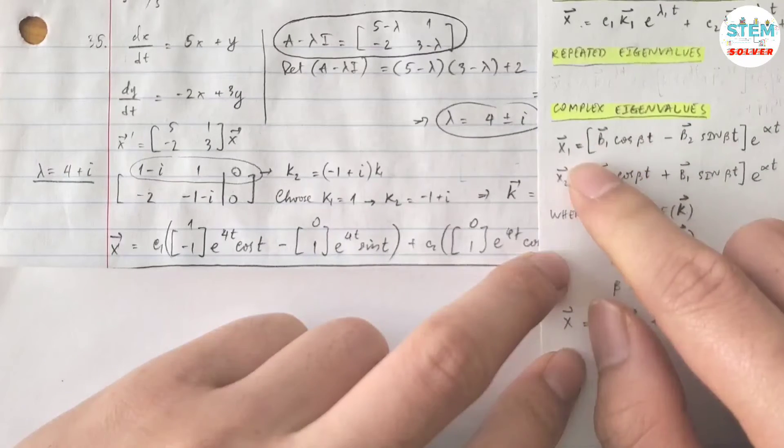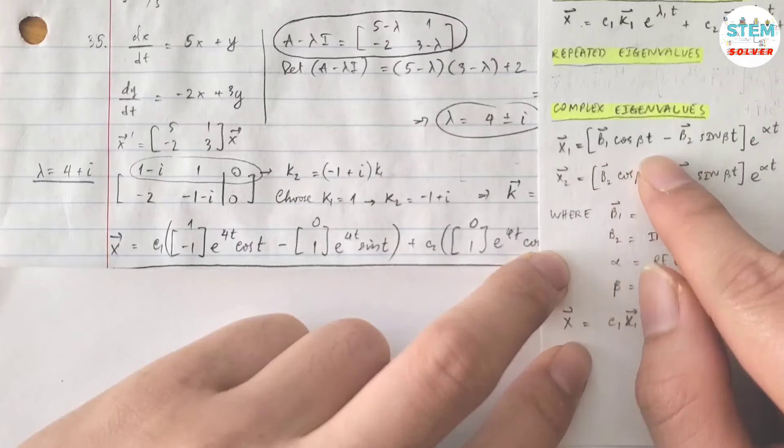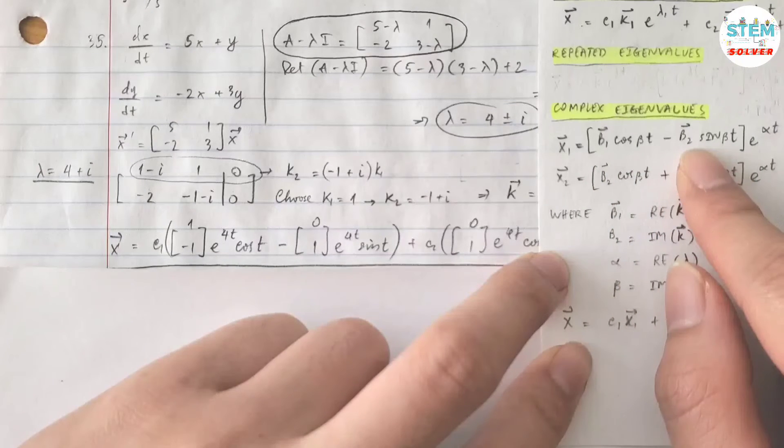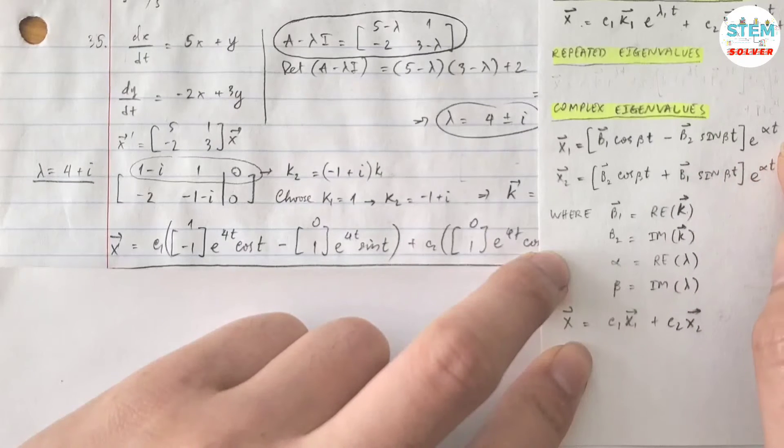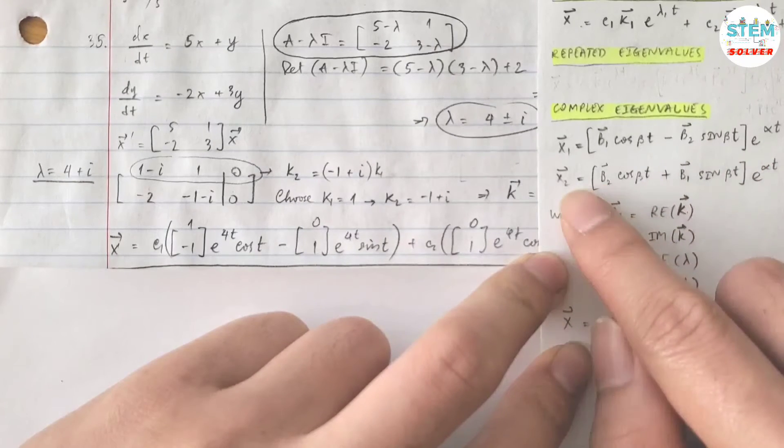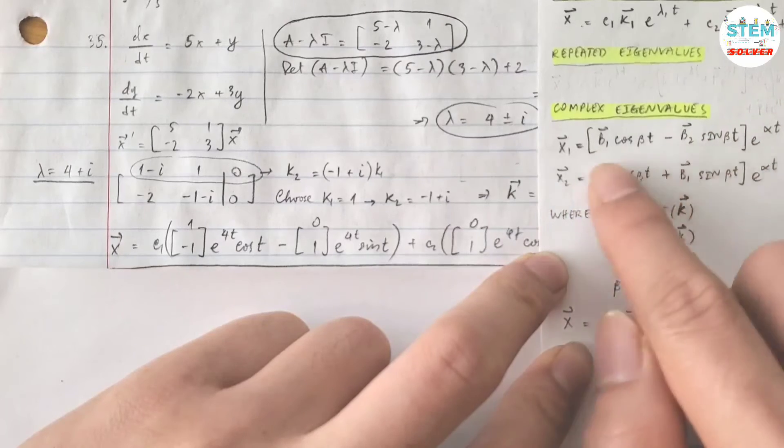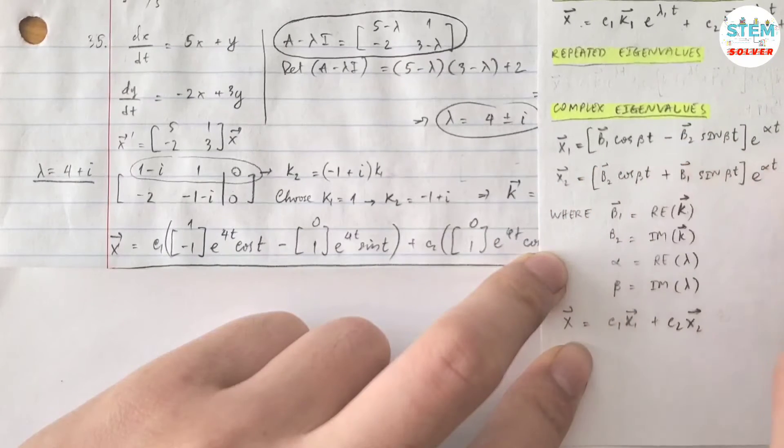So what is your vector x1? Vector x1 is vector b1 times cos(beta t) minus vector b2 sin(beta t), all multiplied by e to the alpha t. And for the second solution, you just switch vector b2 and b1 and then change the sign. Everything else stays the same.